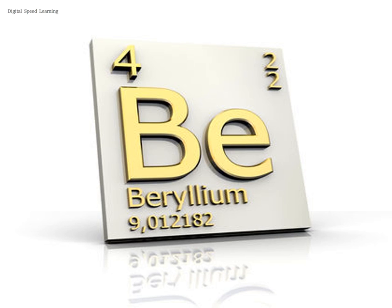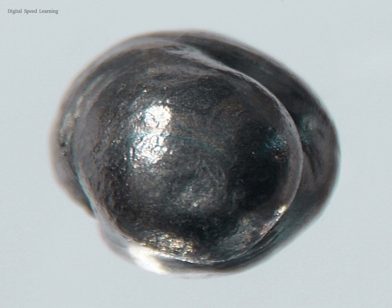Beryllium improves many physical properties when added as an alloying element to aluminum, copper — notably the alloy beryllium-copper — iron and nickel. Beryllium does not form oxides until it reaches very high temperatures. Tools made of beryllium-copper alloys are strong and do not create sparks when they strike a steel surface.